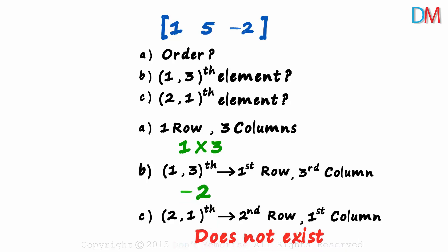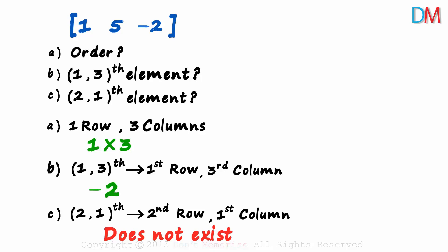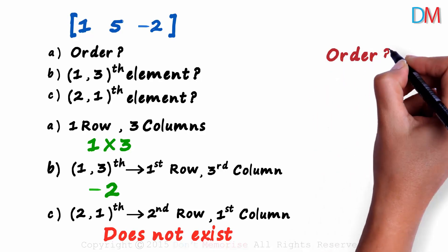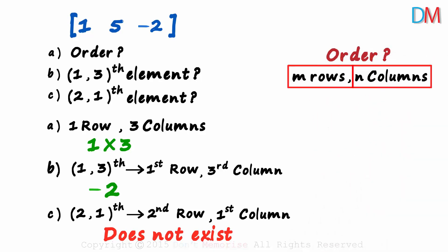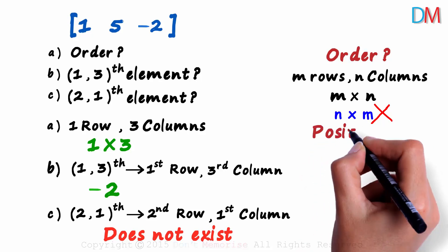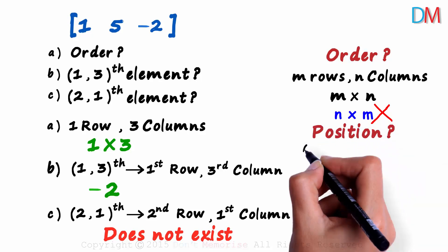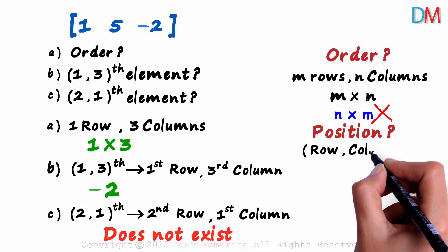Let's quickly review what we learned. What is the order of a matrix? If it has m rows and n columns, the order will be m by n, and not the other way around. And how is the position of an element of a matrix defined? The row number first and then the column number.